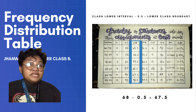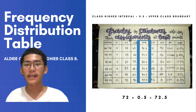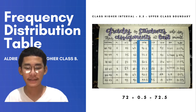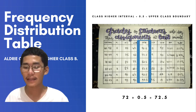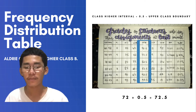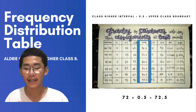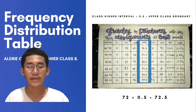In accordance with lower class boundaries is the upper class boundary. In getting the upper class boundaries, we cite the class higher interval and add 0.5. In our data, the class higher interval is 72, therefore 72 plus 0.5 is 72.5. So 72.5 is the upper class boundary of our first class. You will do the same until you get all the upper class boundaries.